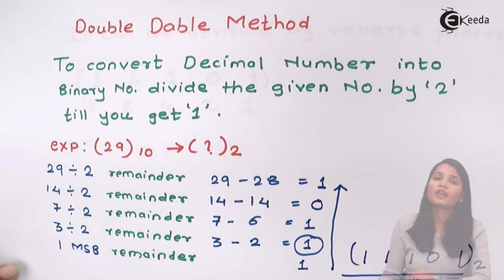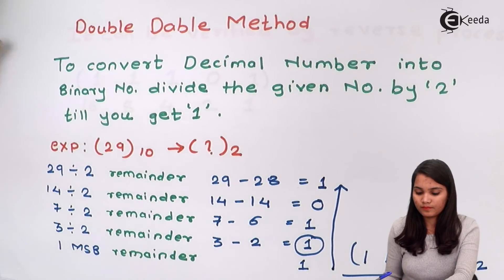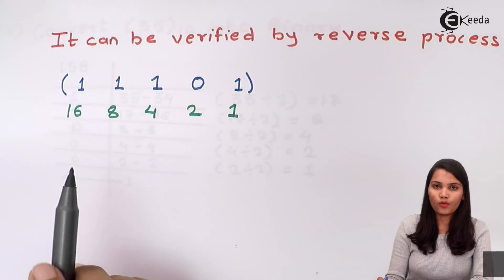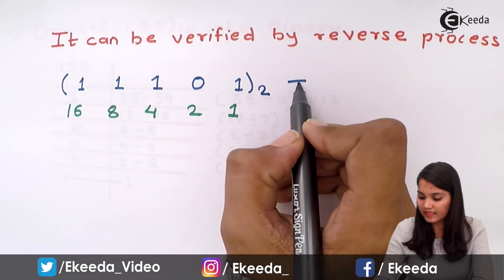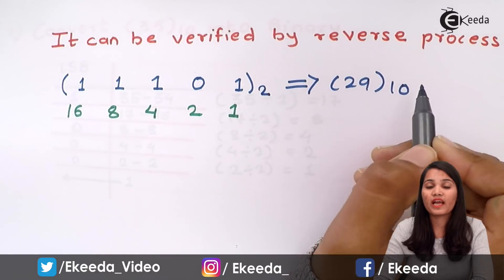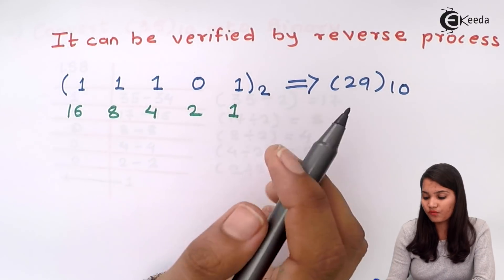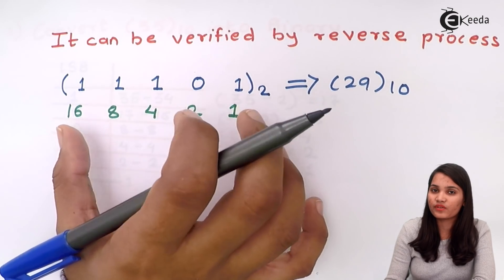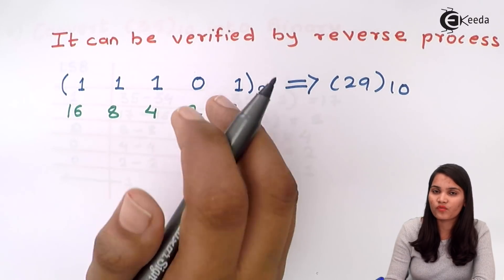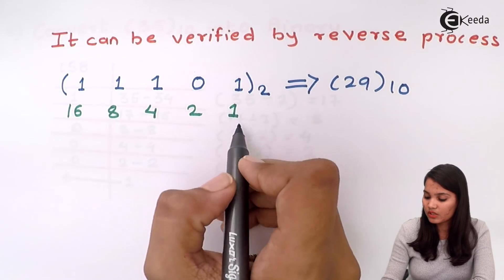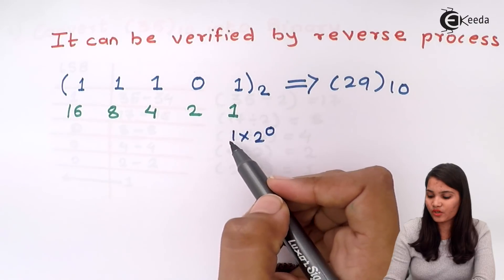Now you can also verify your answer in an exam. We have got the binary number 1, 1, 1, 0, 1 in base 2 — the conversion of 29. To verify that this binary number gives 29 in decimal, we write down the weightages. Always start from the right-hand side, which has the lowest weightage value. So 1 × 2 raised to 0 gives a weightage value of 1 for the rightmost digit. Then 0 × 2 raised to 1.